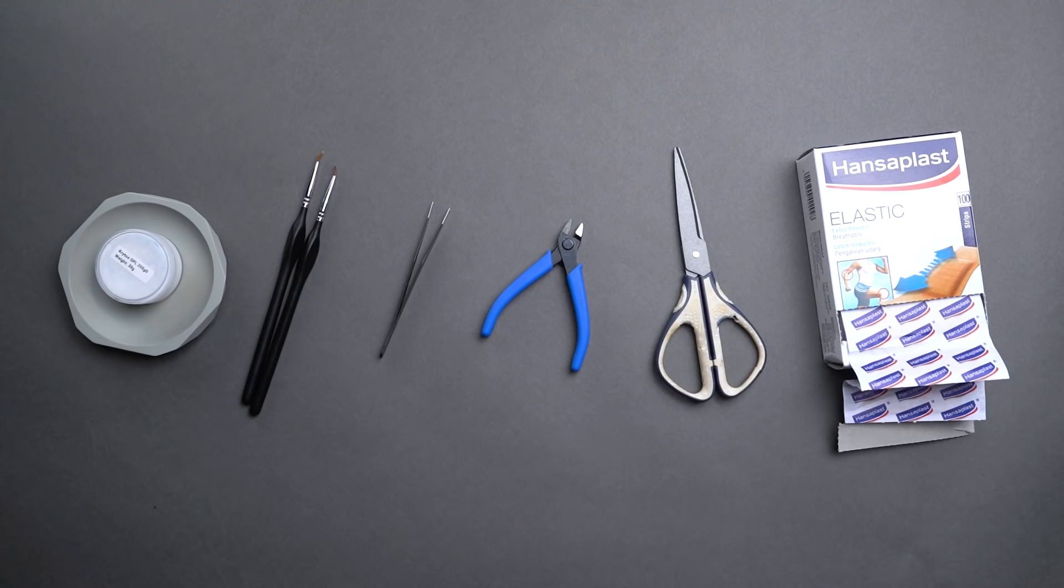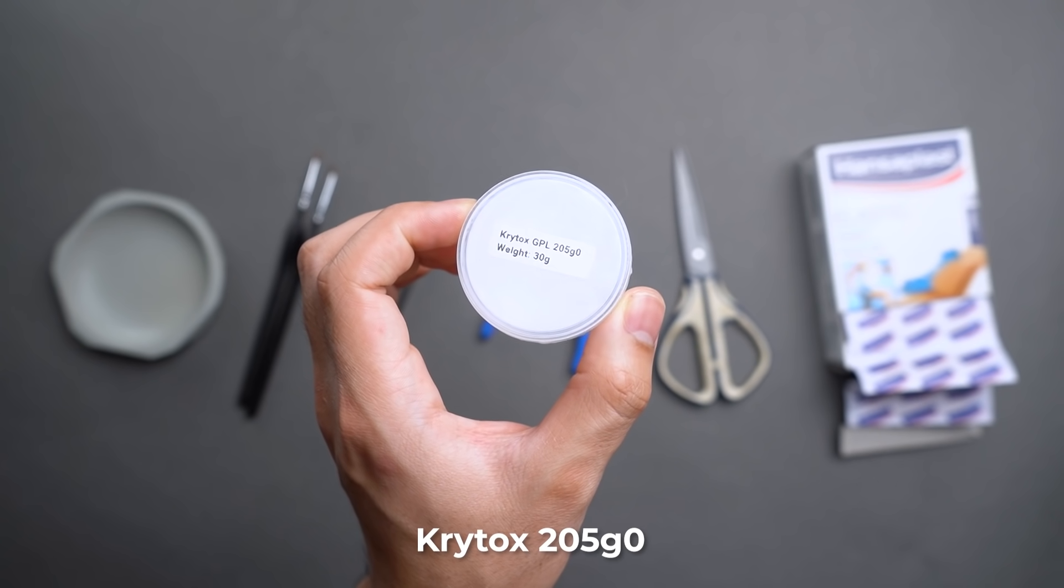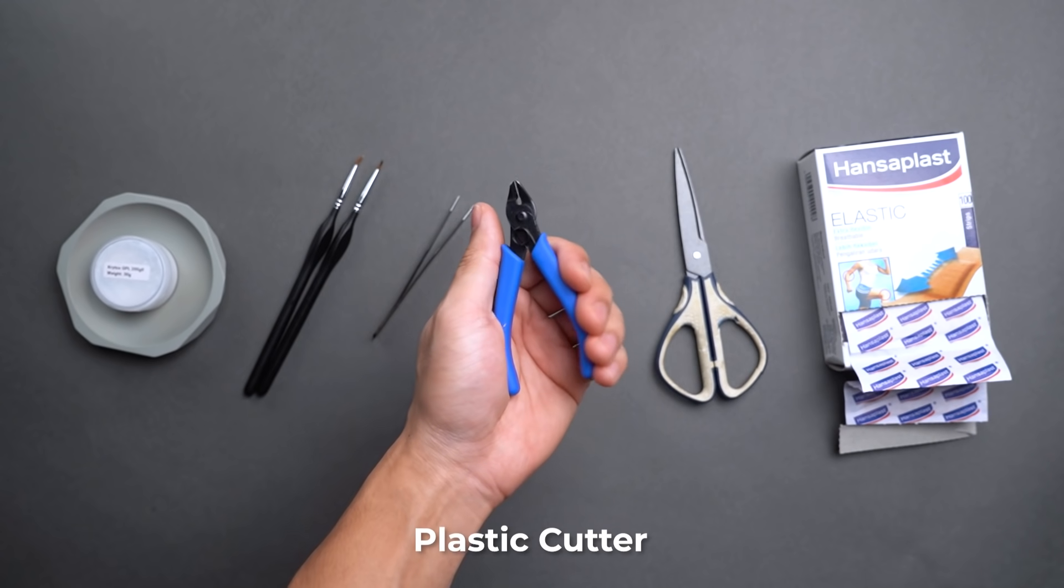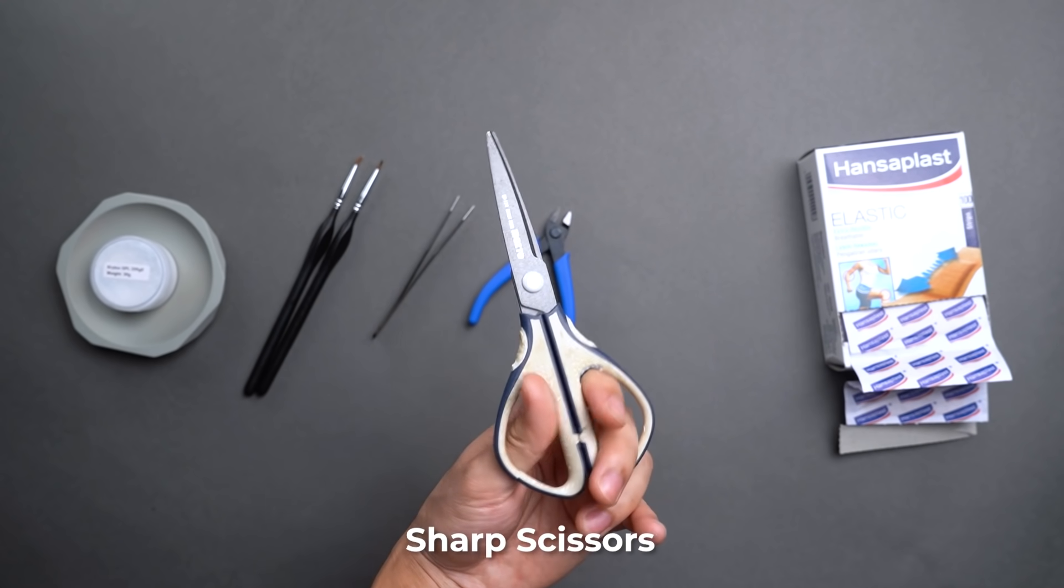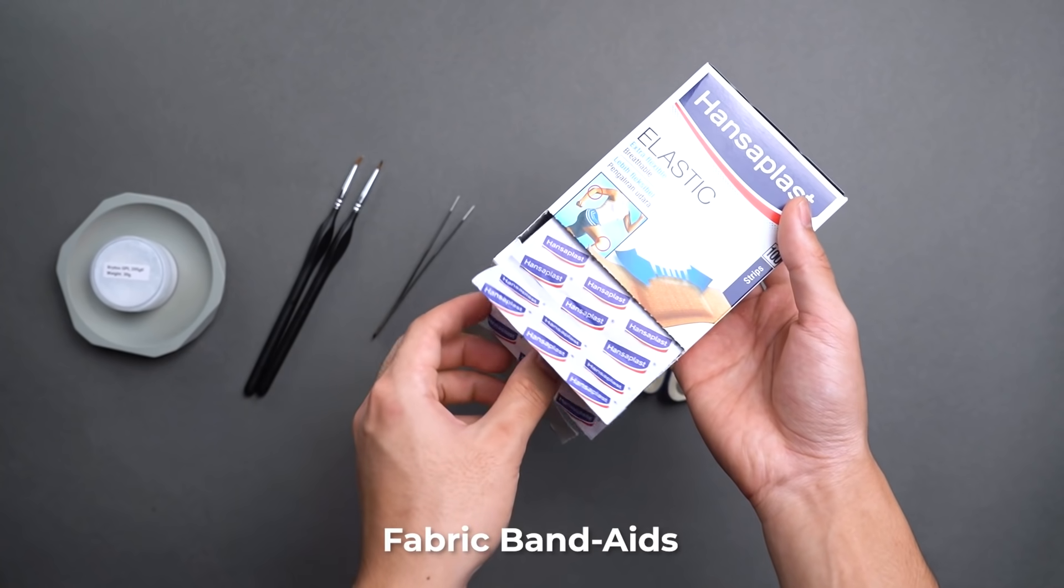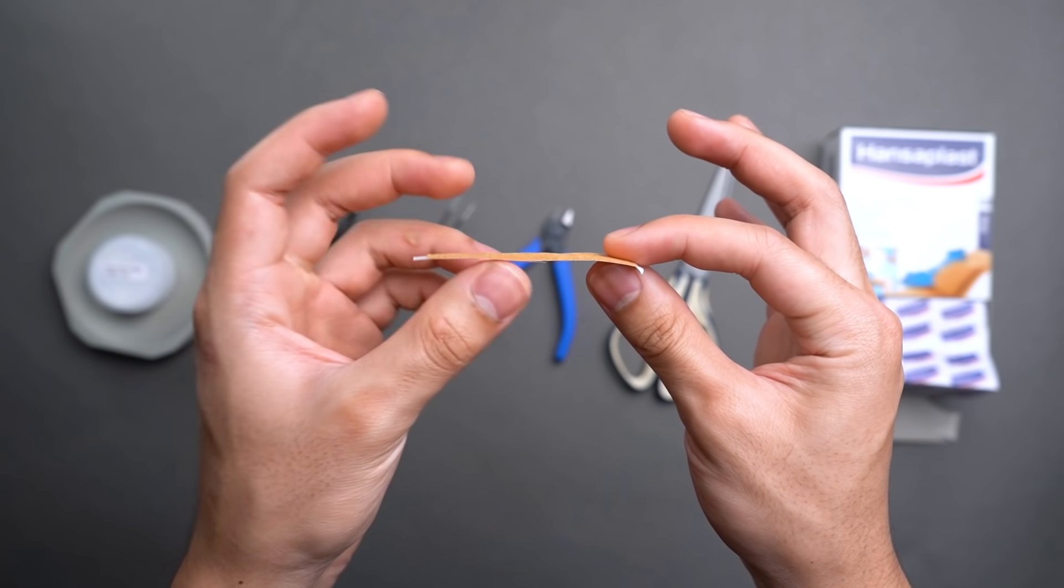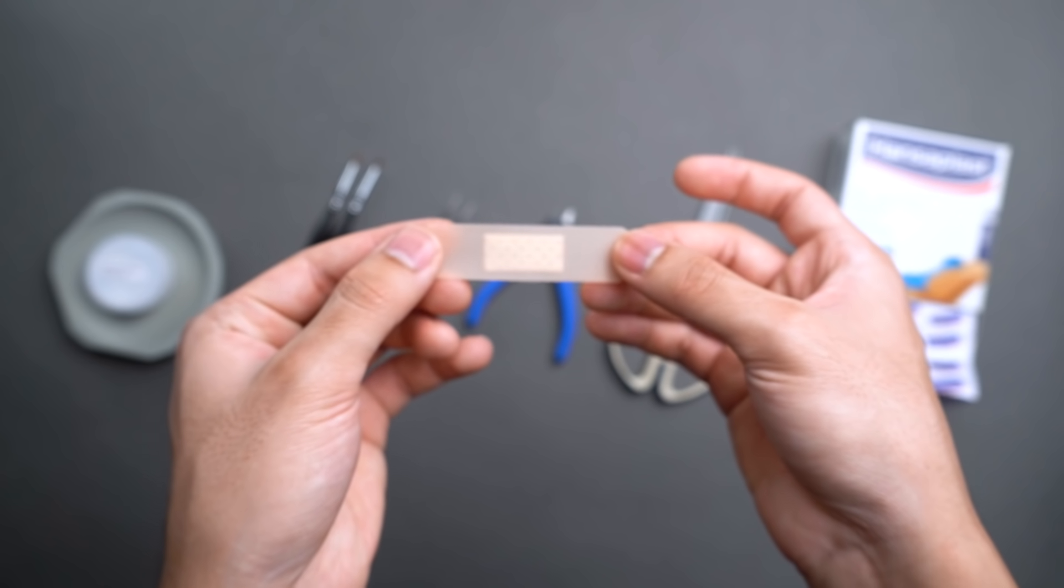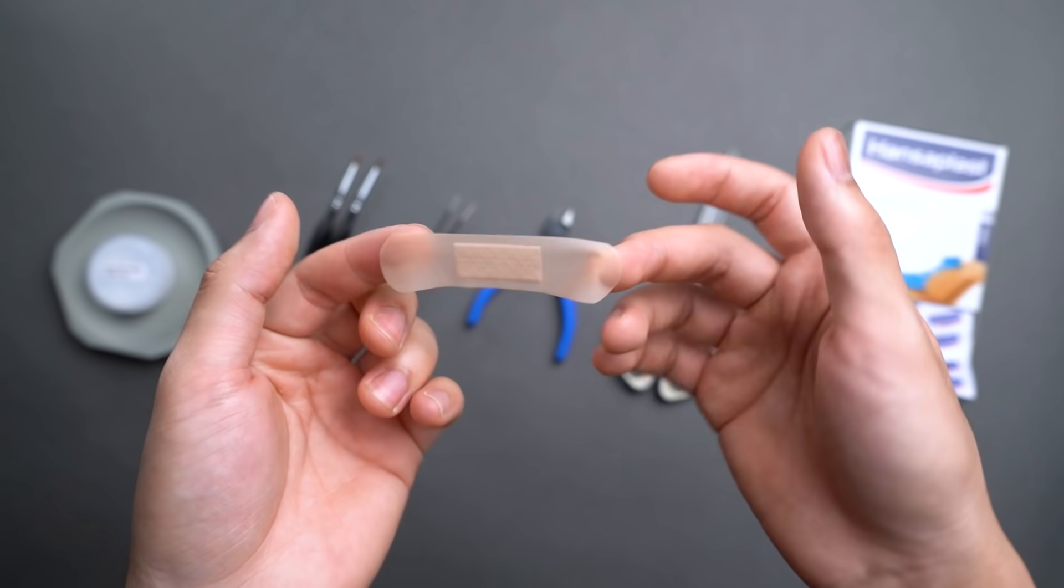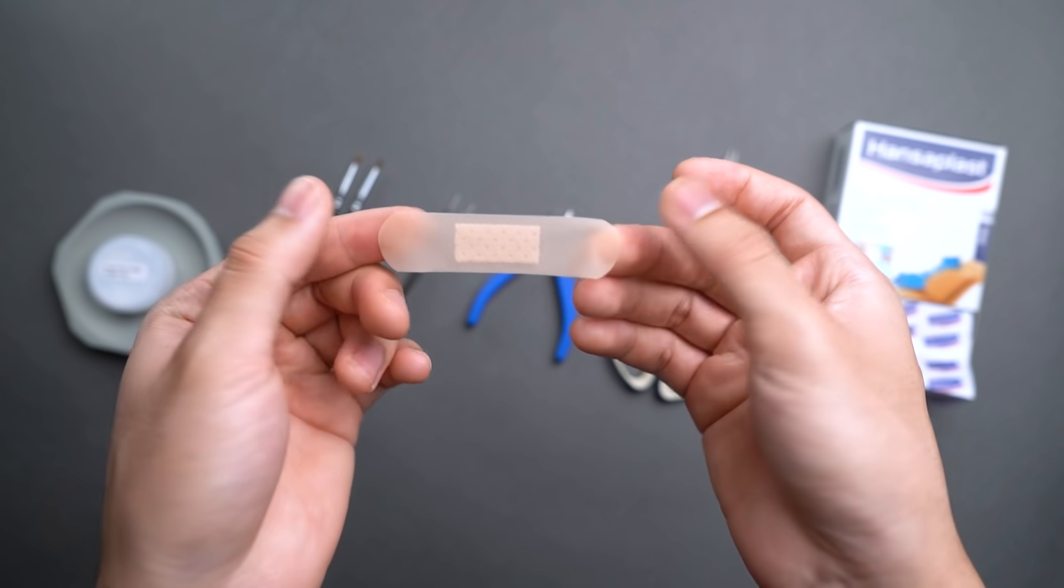Alright, so before we get started, you're going to need these items: Krytox 205G0, two brushes, a tweezer, a plastic cutter, sharp scissors, and most importantly, fabric band-aids. They need to have a bit of thickness but not be too thick so that it blocks the entire stabilizer stem, and try to avoid getting the plastic band-aids that are waterproof as they are too thin and provide no actual cushioning for the holy mod.